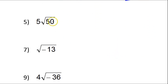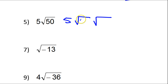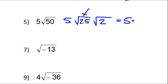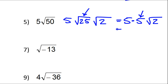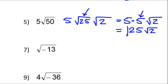Looking at number 5, that 5 is just going to sit there for a minute. 50 is not a perfect square, so we have to break that up. We could split up 50 as 25 times 2. Now, 25 is a perfect square, so I will have 5 times... the square root of 25 is 5. And then we have that square root of 2. But of course, 5 times 5 is 25. So the final answer will be 25 radical 2.